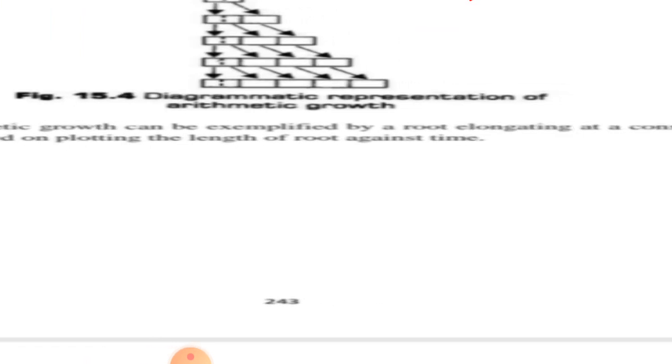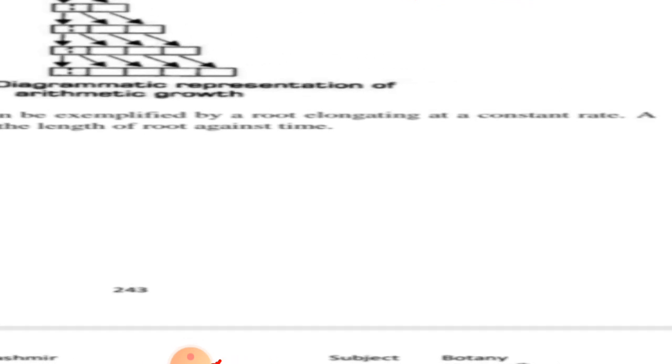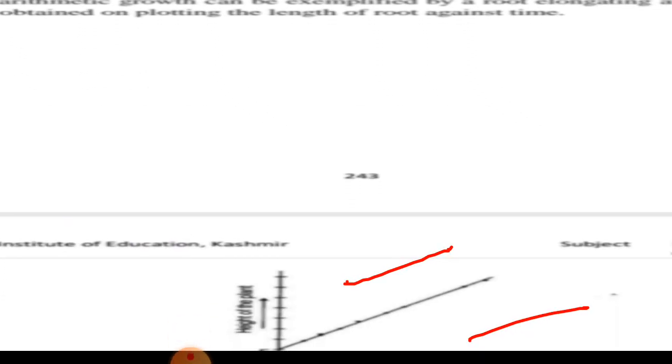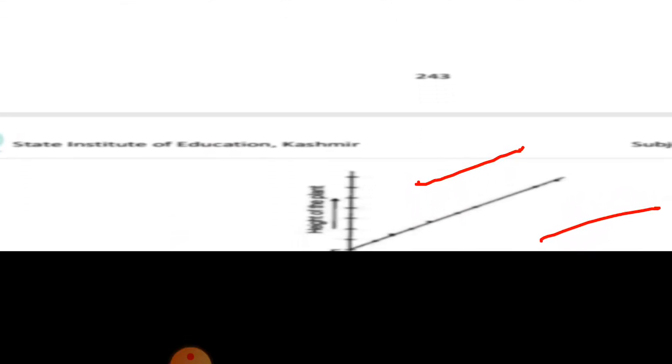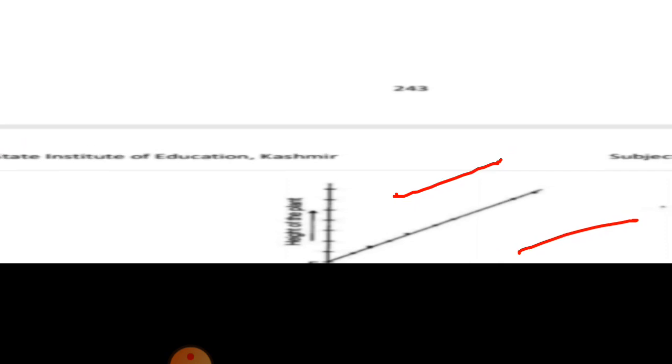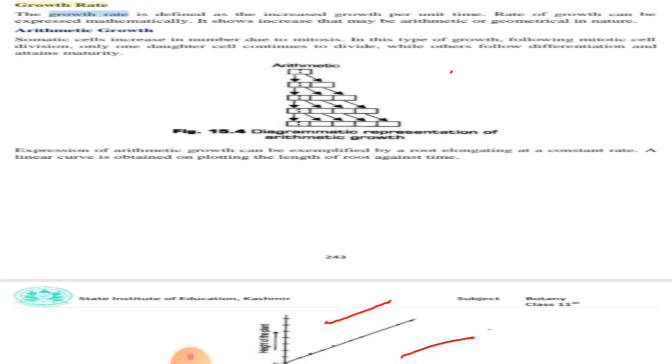An expression of arithmetic growth can be exemplified by root elongation at a constant rate. A linear curve is obtained on plotting the length of the root against time. The rate of growth is constant. In mitotic cell division, only one daughter cell can divide while the other differentiates and matures.